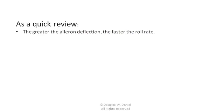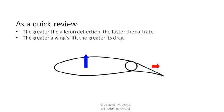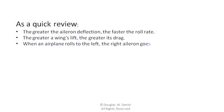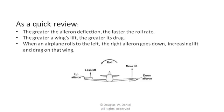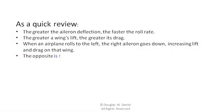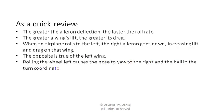As a quick review: the greater the aileron deflection, the faster the roll rate. The greater a wing's lift, the greater its drag. When an airplane rolls to the left, the right aileron goes down, increasing lift and drag on that wing. The opposite is true of the left wing. Rolling the wheel left causes the nose to yaw to the right and the ball in the turn coordinator to move to the left — symptoms of adverse yaw.